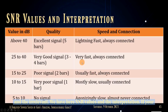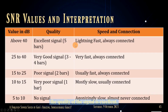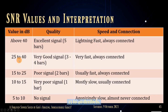Here are the SNR values and their interpretation. If your calculated value is about 40 decibels, the quality of the signal is excellent — equivalent to 5 bars: lightning fast, always connected. At 25 to 40 decibels, that is a very good signal, 3 to 4 bars, very fast, always connected.